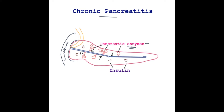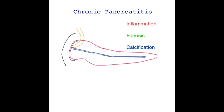The other important function of the pancreas is endocrine — producing hormones, the most important of which is insulin. These pass directly into the blood in response to triggers such as blood sugar levels.